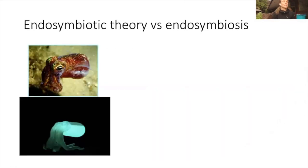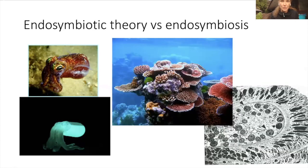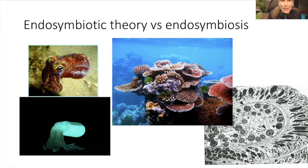Every multicellular creature and many, many single-celled organisms have endosymbionts. This little squid has bacteria that can glow and live in it. Coral are full of endosymbionts - they have different kinds of protists and bacteria that live in them and do different things: they produce carbon, amino acids, and other metabolites for defense.